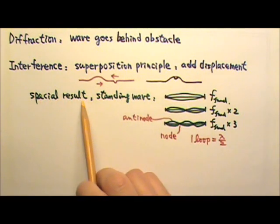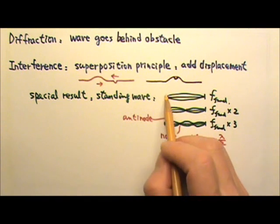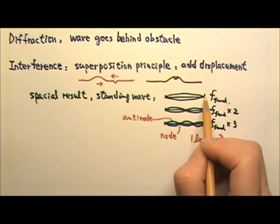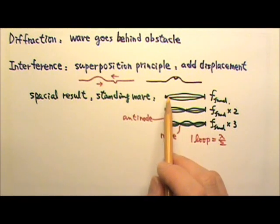One special result of interference is standing waves. Let's look at the standing waves on a string. When the string oscillates in one loop, when we have resonance, this is called the fundamental frequency.